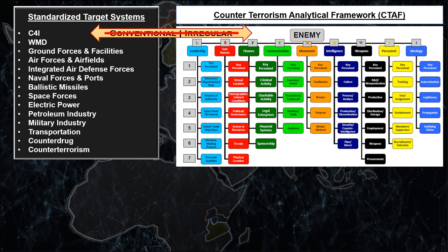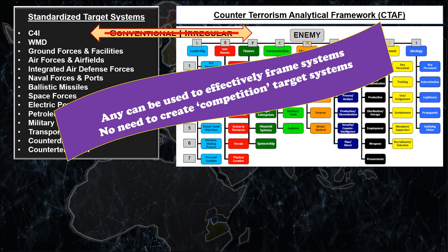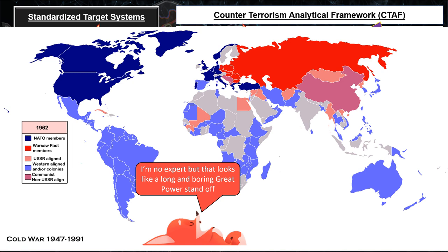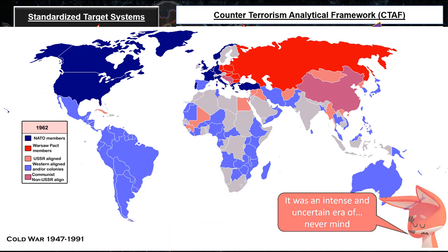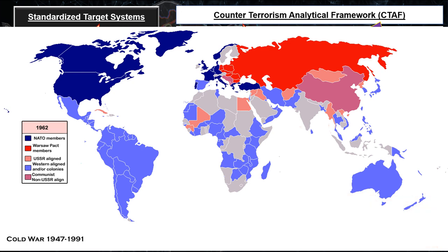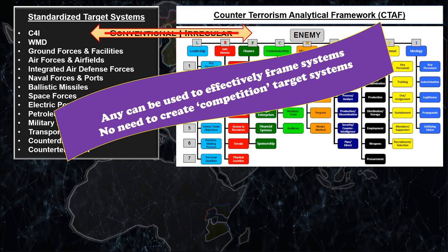Now that we're in the era of so-called great power competition, many service members new to joint targeting are looking for the great power competition target systems framework. This itself is another misconception. In our operational environment videos, we outlined how great power competition has always existed. Therefore, any target system categories developed in the past are very likely to apply to great power competition. For example, all the target systems on the left were developed during the 44-year-long Cold War between the superpowers of the U.S. and Soviet Union — developed when two great powers were competing for global influence. If you as an analyst think these are not effective enough, you can add in the applicable CTAF categories. Combined, these two target system constructs appear to cover 90% of all modern target system categories.